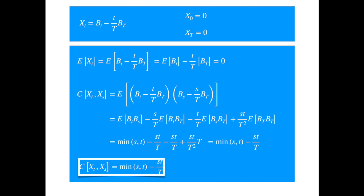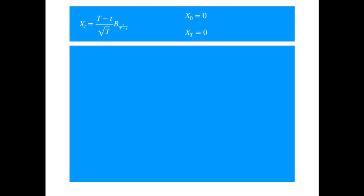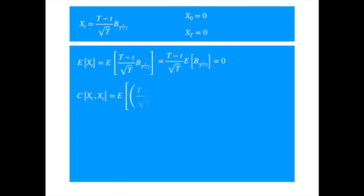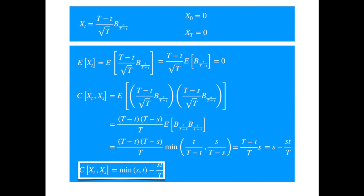Hence the process so defined has the same distribution as our Brownian bridge and takes the required values at both ends. Now let's try another specification of X. Again, it is easy to see that its value is zero at both ends. Taking the known terms out of the expectation and recalling that the covariance of two Brownians is the minimum of the two time subscripts, if we assume s is the smallest, then the (T − s) terms cancel, leaving a simple expression which we simplify. For the general case where we do not assume s is smaller than t, we get the general covariance formula as required.